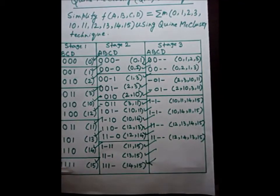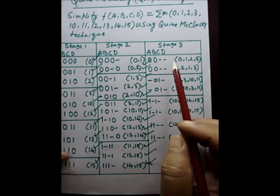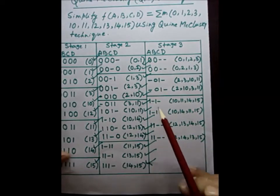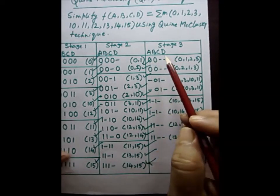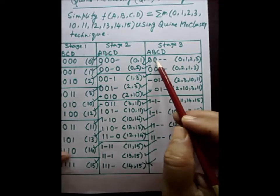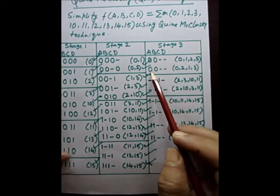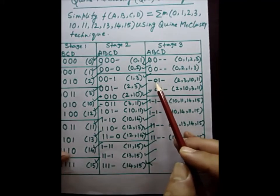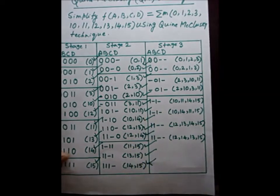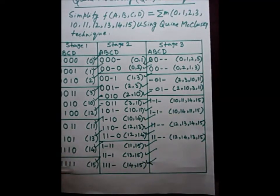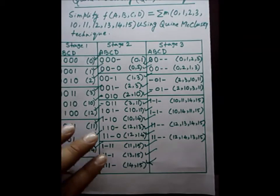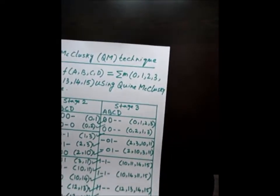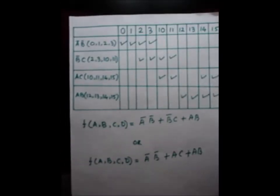We now look at the conclusion. The unticked terms remaining in stage 3 are the prime implicants. The unticked term 00-- means ā·b̄; 0--0 means b̄·c; and the term a·c (AC) is also a prime implicant. These are called the prime implicants.